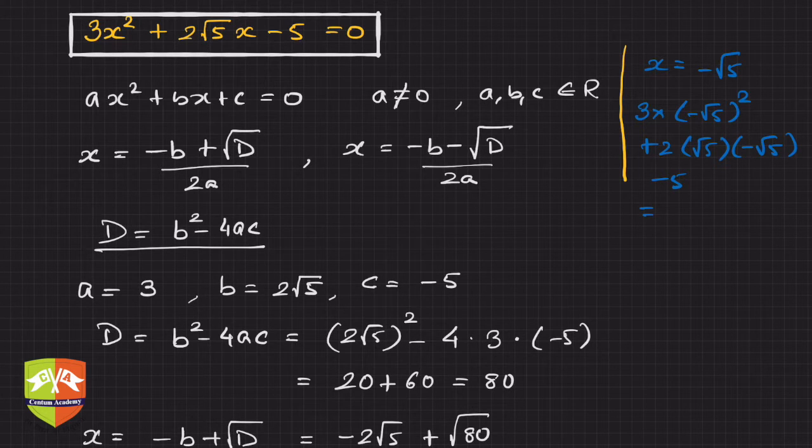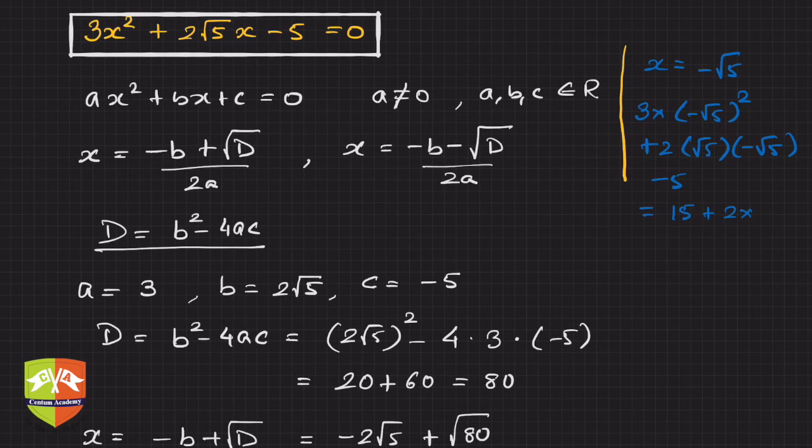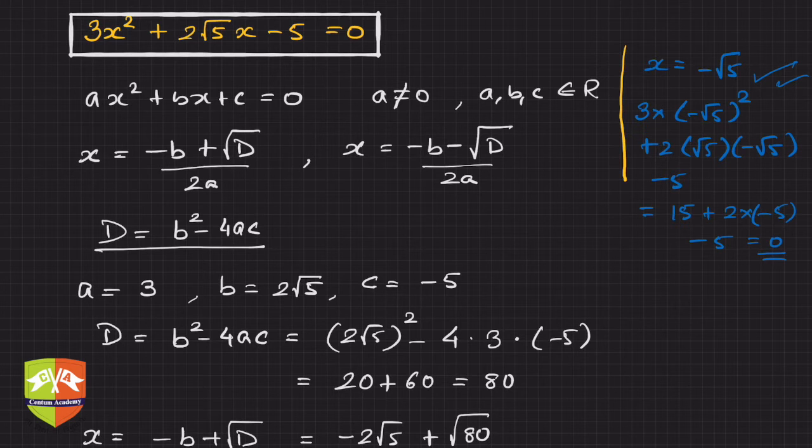Calculating: (-√5)² is 5, so 3 × 5 = 15. Then 2 × (-√5) × (-√5) = 2 × 5, but it's -10, and -5, which equals 0. Hence our solution is correct.